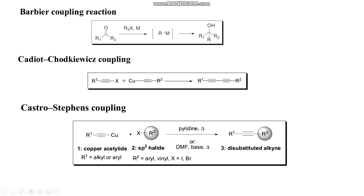The third example is the Ullmann coupling, and here it is the reaction between copper acetylide with an aryl halide under heating and in the presence of a base, for example pyridine, to form an aryl acetylene.